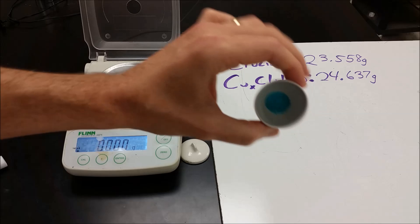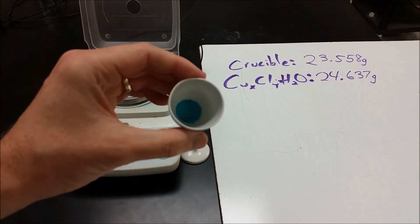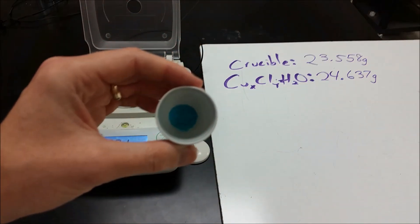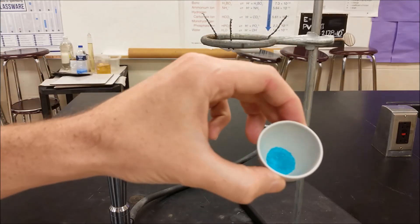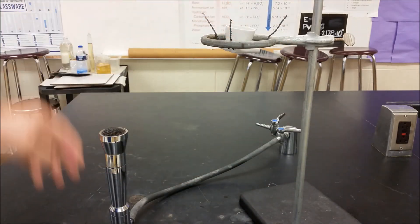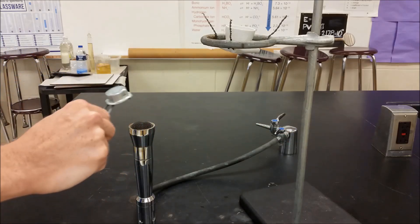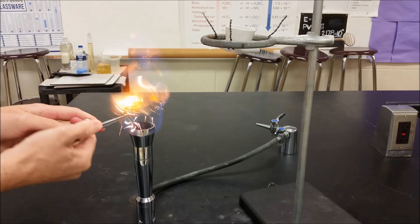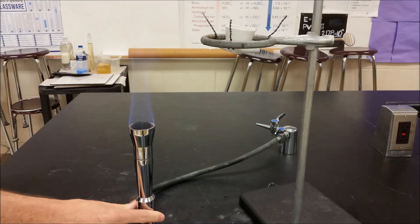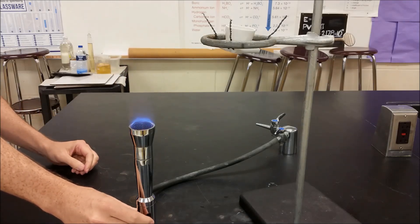So now we're going to take that and we're going to heat that until it changes color, from that blue-green until it's completely brown. So we have our hydrate here, and we're now going to heat it. We're going to light our Bunsen burner. Make sure we have a nice, good blue flame.